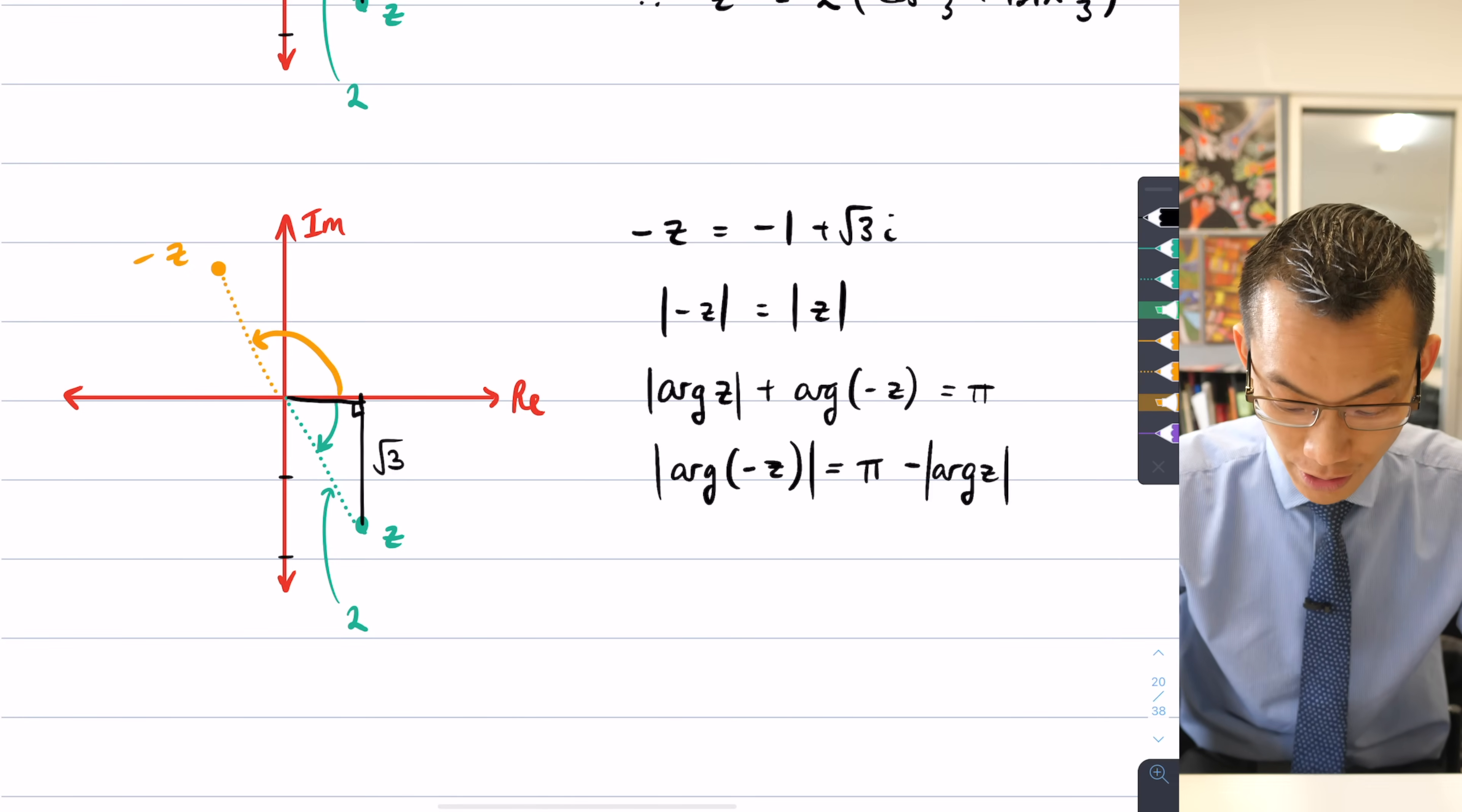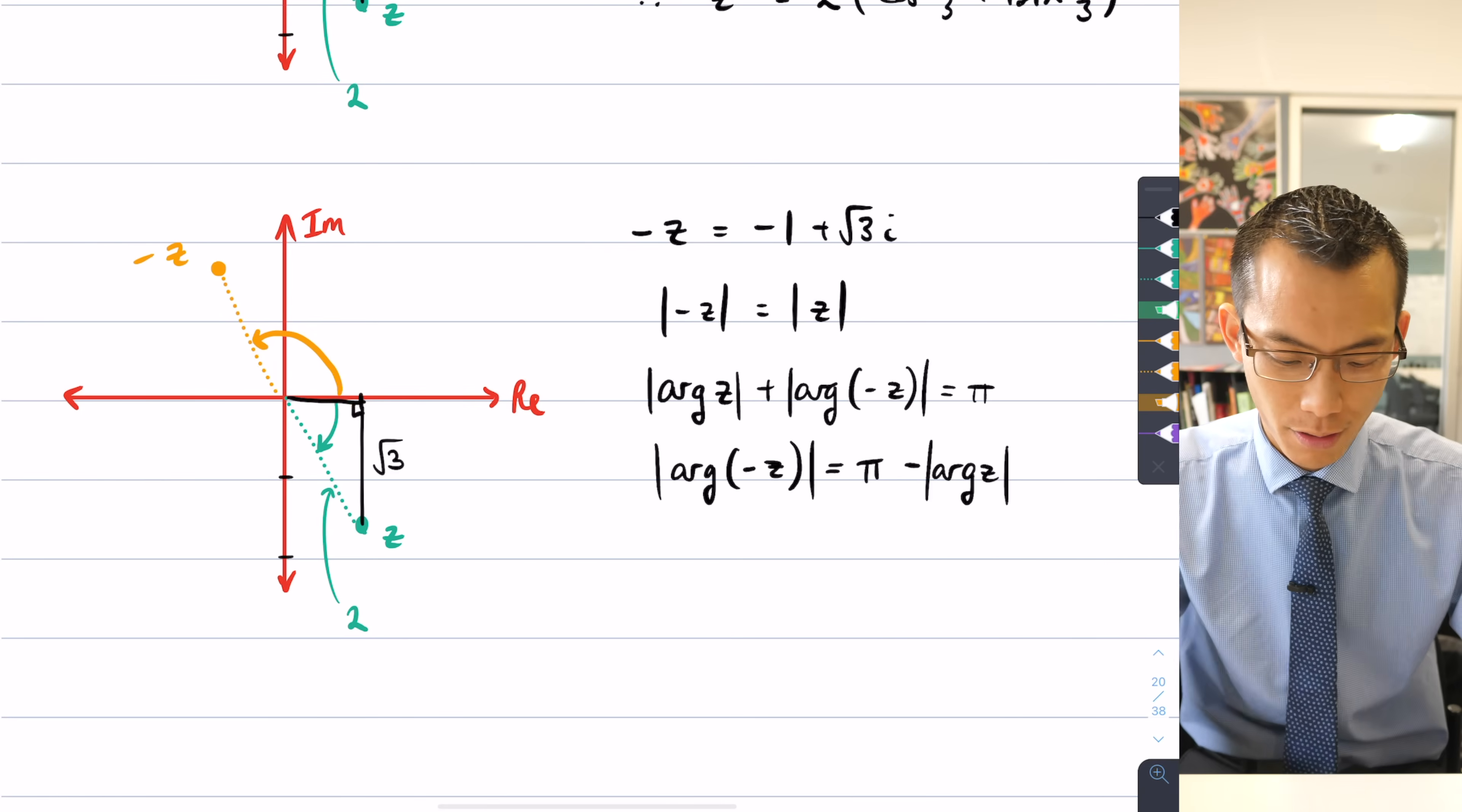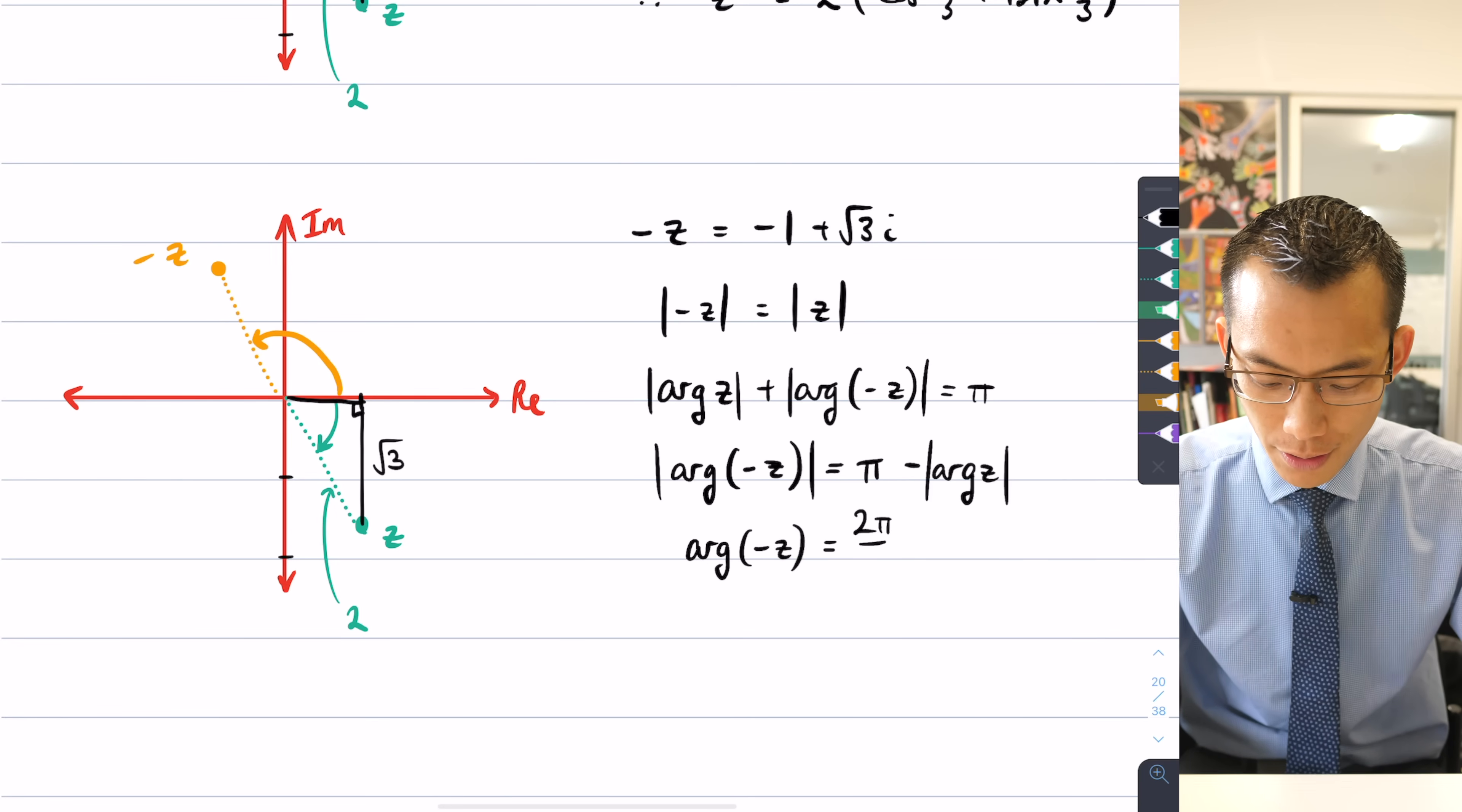Here, this is just going to π/3, that makes this, this other part here, the orange part, 2π/3. So I can say the argument of -z in this case is 2π/3.